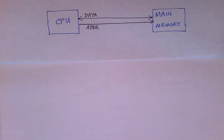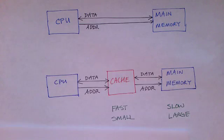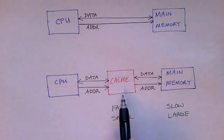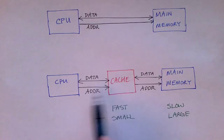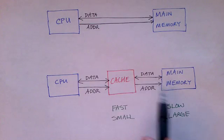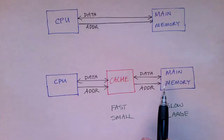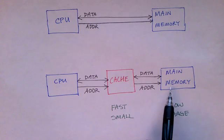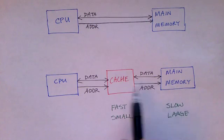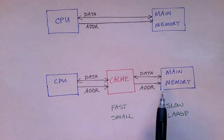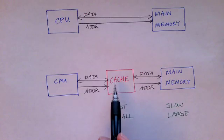Unfortunately, memory is relatively slow, and this is where cache comes into play. The main idea of a cache memory is that it sits between the CPU and the main memory. The main memory is much larger than the cache memory, and it's also much slower. So the idea is that the cache can speed things up.